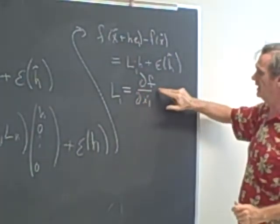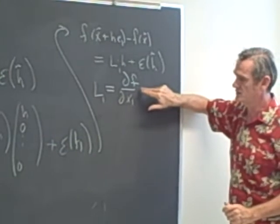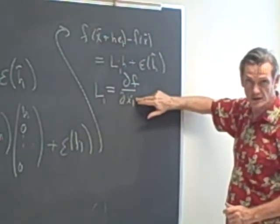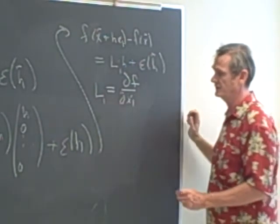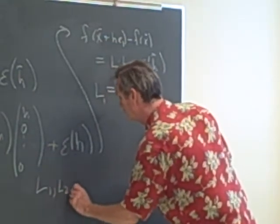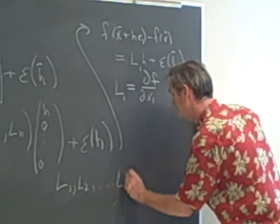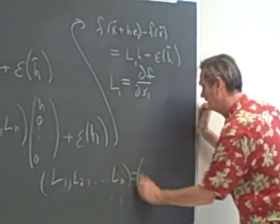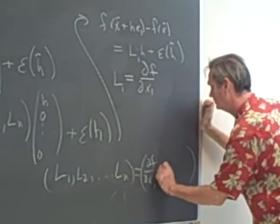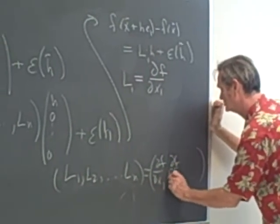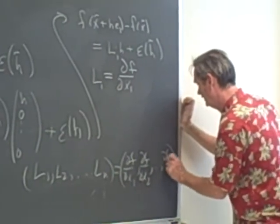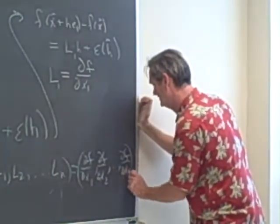There's nothing special about x1 — we can do this in any coordinate direction. So we find that our derivative row vector [L1, L2, ..., Ln] is actually equal to [∂f/∂x1, ∂f/∂x2, ..., ∂f/∂xn], the vector of all partial derivatives of f.